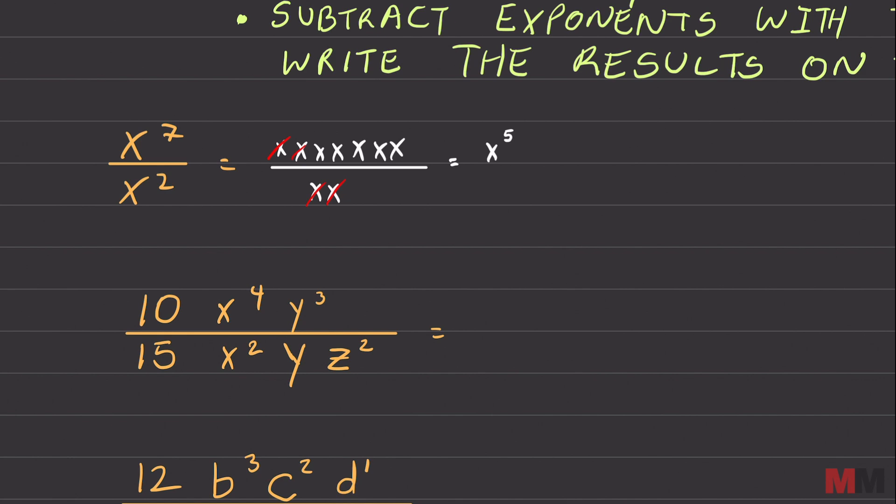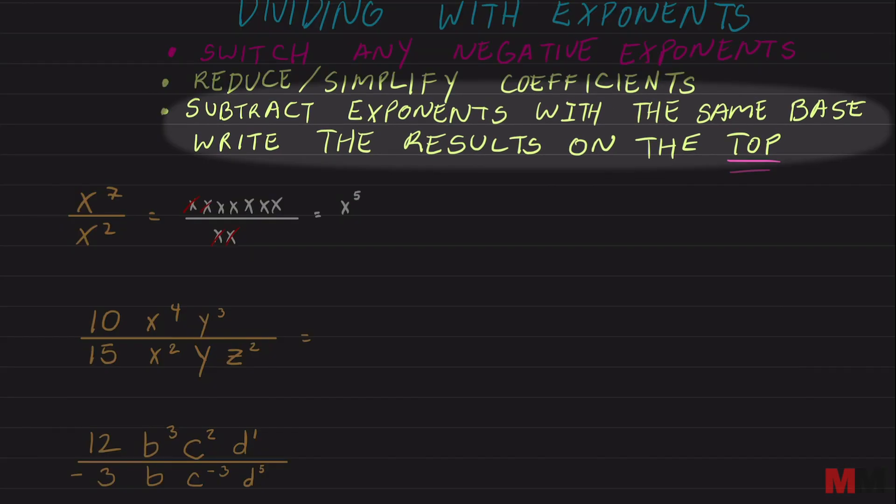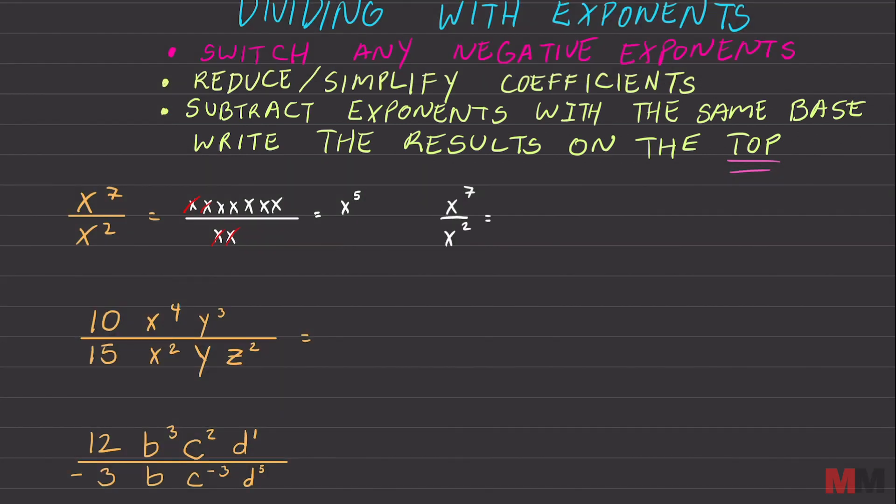That is just way too much writing and work for me. There is a shortcut, which is this rule right here. All you got to do is subtract exponents with the same base. Another way to do this is just seven minus two, which equals x to the fifth power. Easy as that.